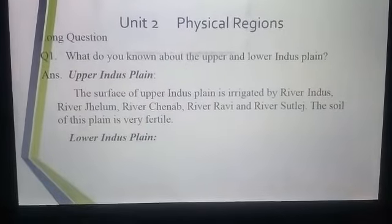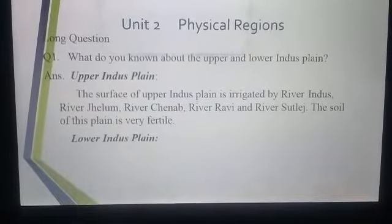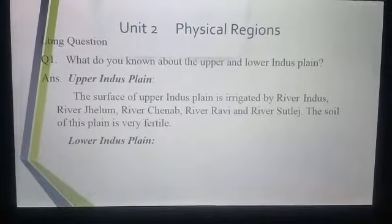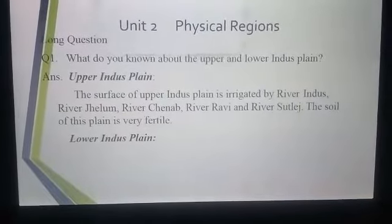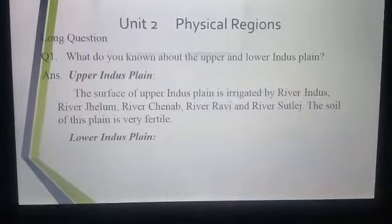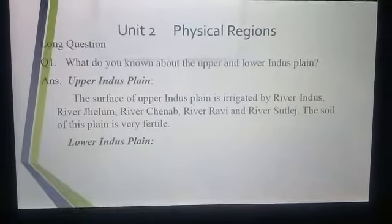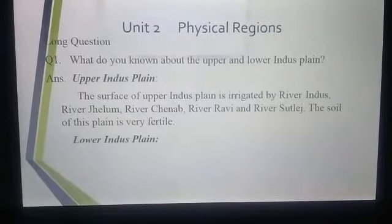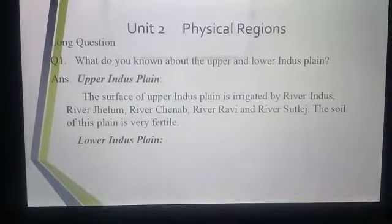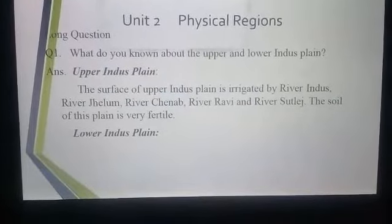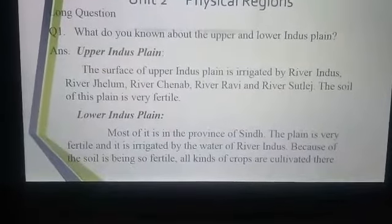The upper Indus plain has very fertile soil and good cultivation because five rivers pass through it — River Indus, River Jhelum, River Chenab, River Ravi, and River Sutlej. Now coming to the lower Indus plain — most of it is in the province of Sindh.